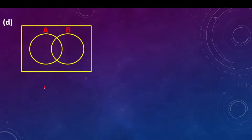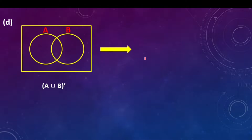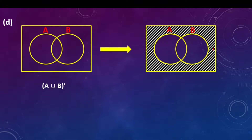Part D talks about A union B complement. Those in A union B are members in set A and set B combined. But they want those that are NOT in A union B combined. So the answer is to shade those members in the universal set outside set A and B, because they are not part of the union of set A and set B.